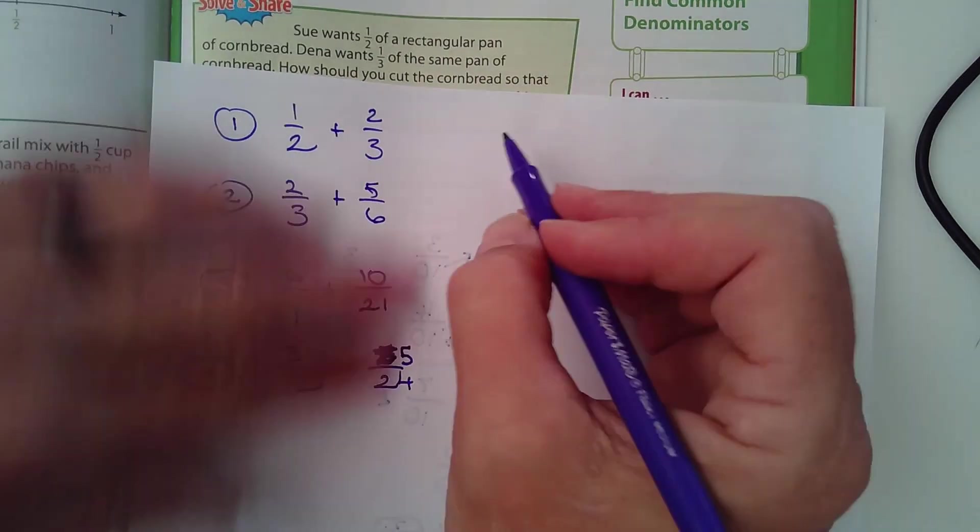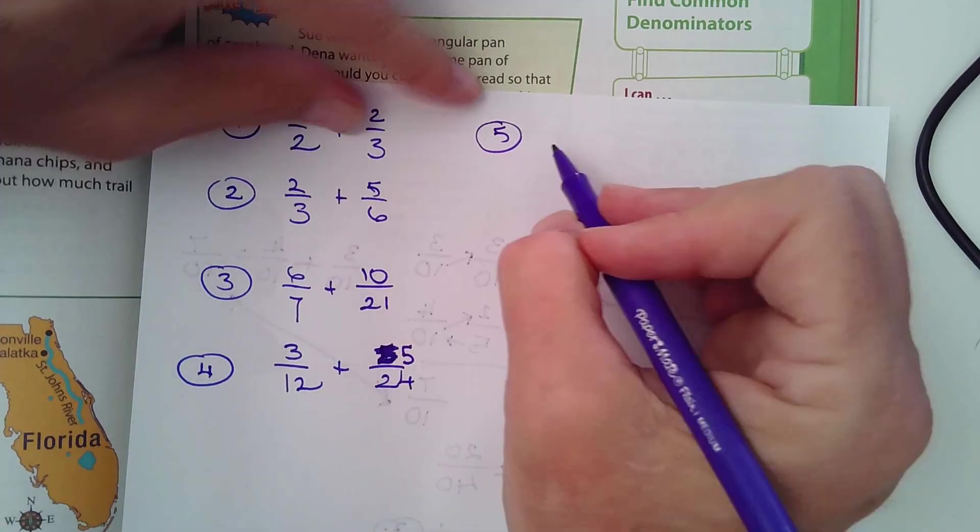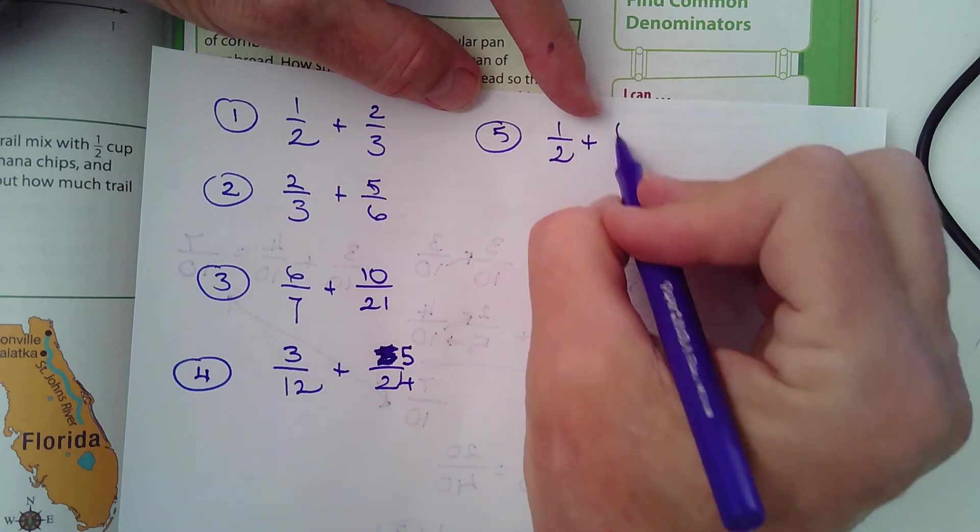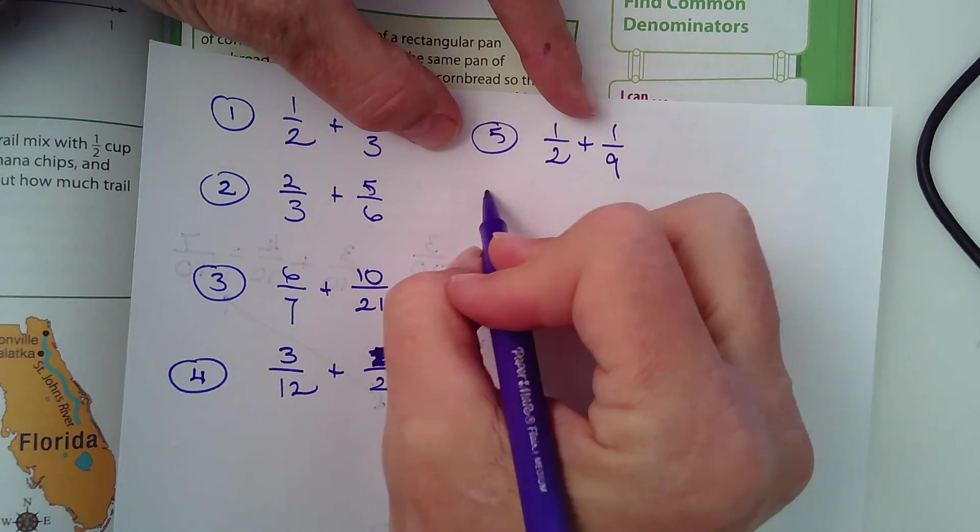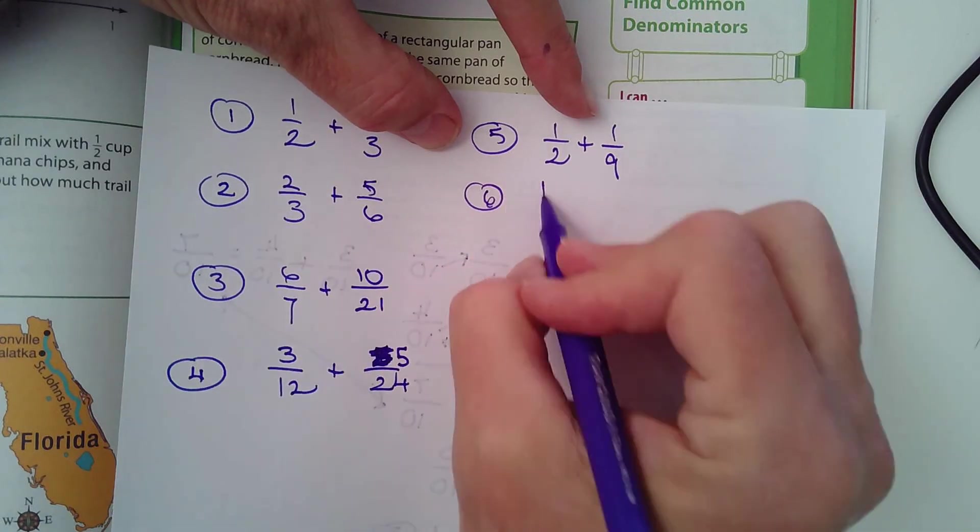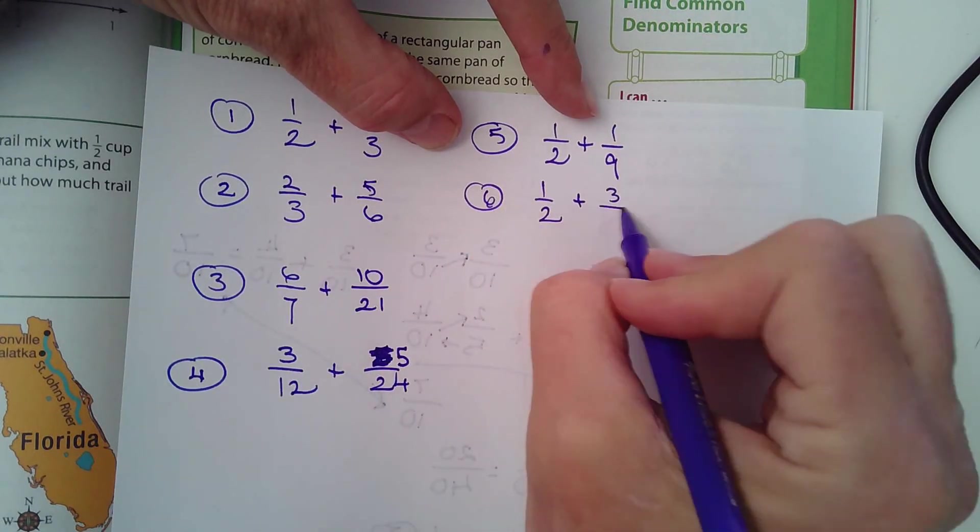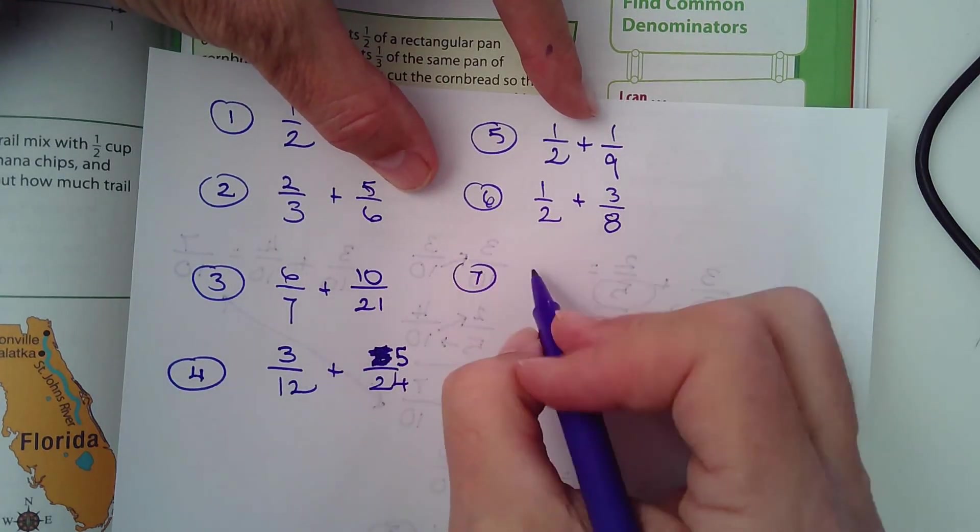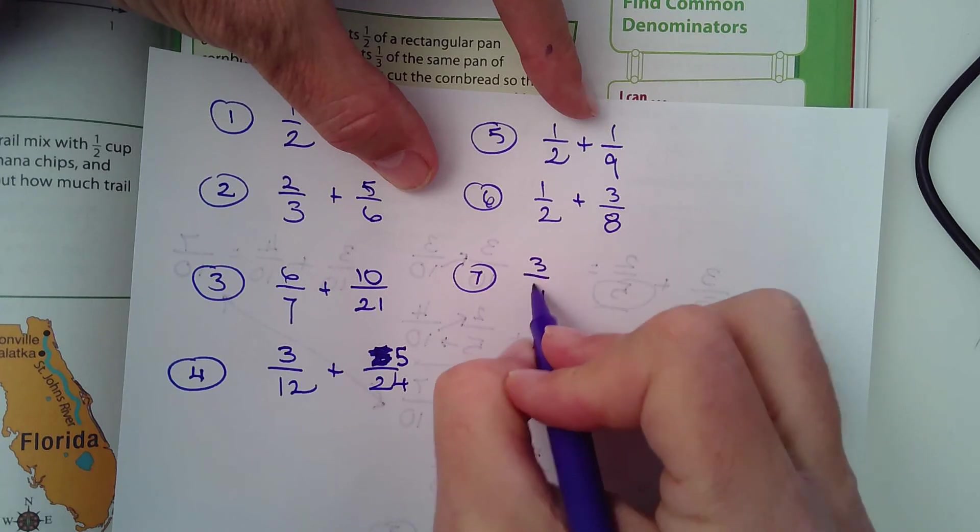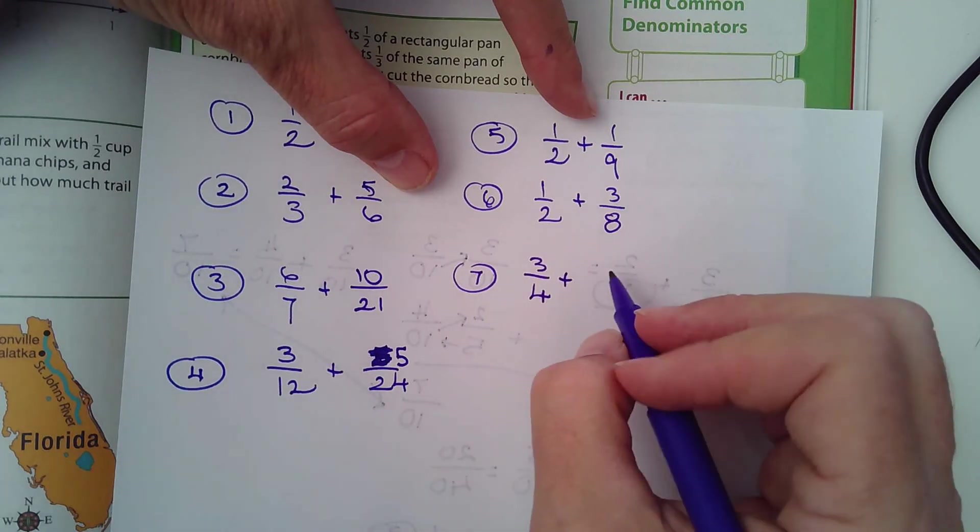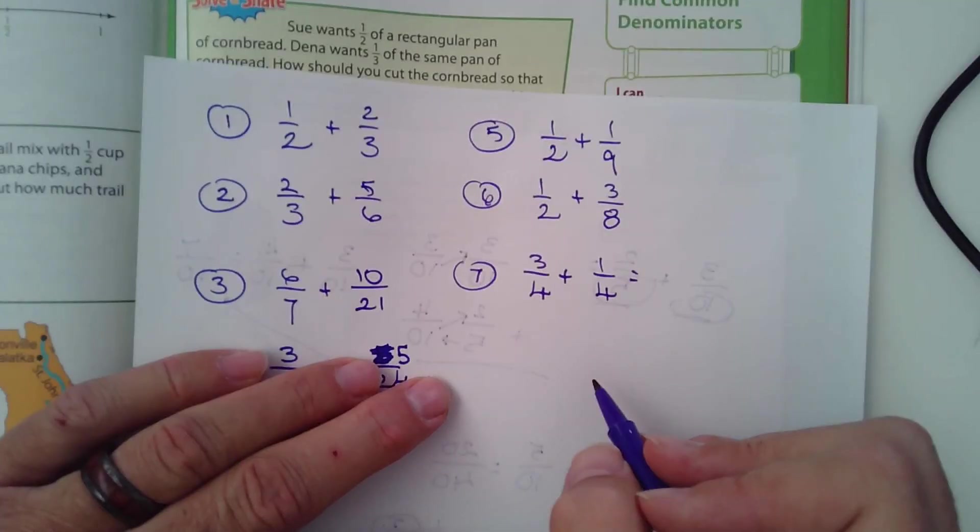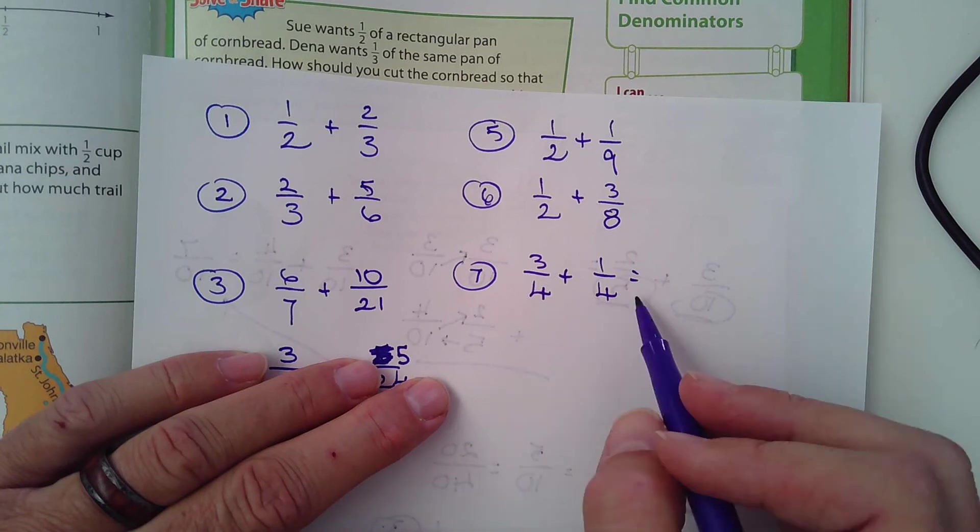How about 3/12 plus 5/24. That's number four. Number five, how about 1/2 plus 1/9. What's a common denominator for those? Number six, 1/2 plus 3/8. Number seven, how about 3/4 plus 1/4. Hmm. You don't need to find a common denominator there. So what could you do?